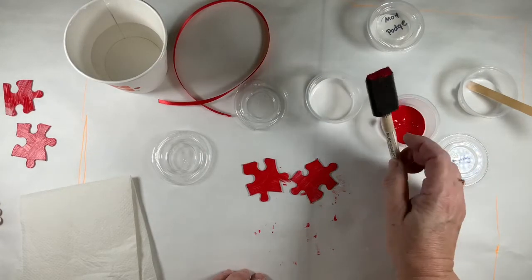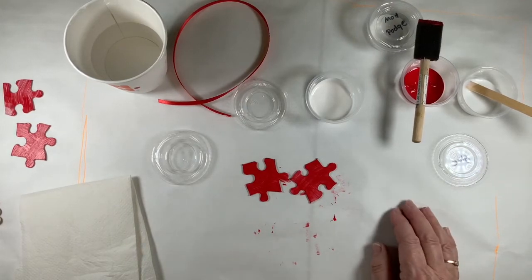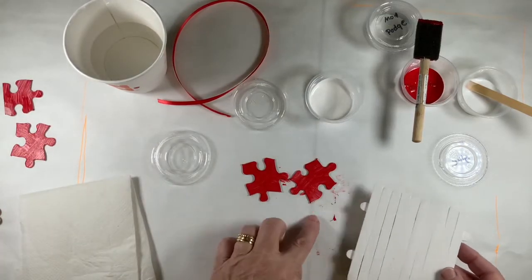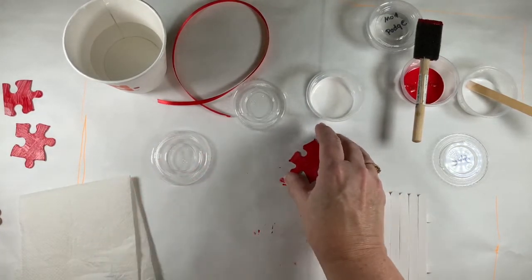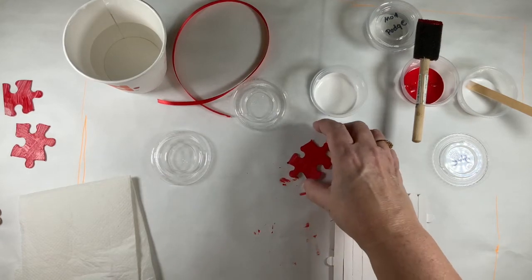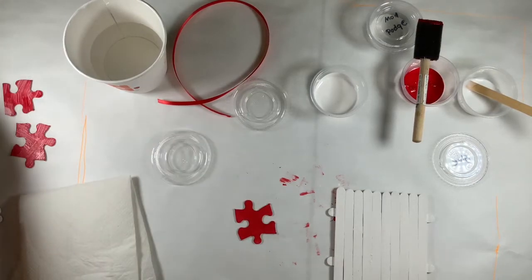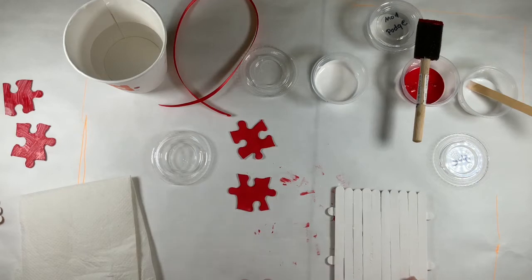There, good, excellent. Now we'll set that aside to dry, and then we are going to glue on the puzzle pieces. That's the next step - we're going to glue on the puzzle pieces. So let's see, I have an already made plaque right there.